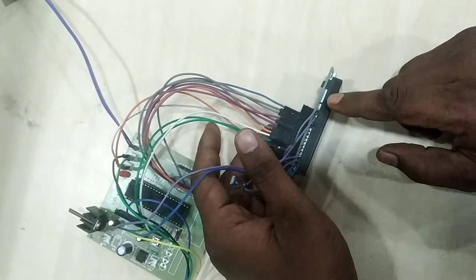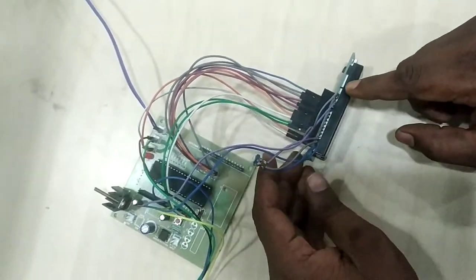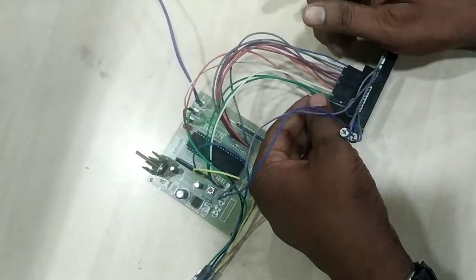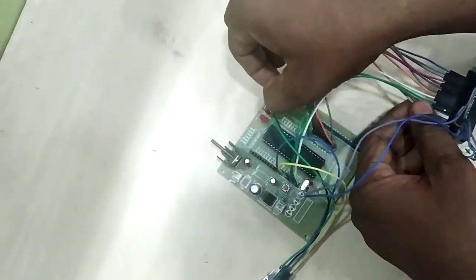One is backlight VCC, another one is backlight ground. So I just shorted with this VCC and ground pins. This VCC and ground connection I given to this board VCC and ground.